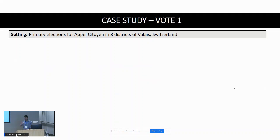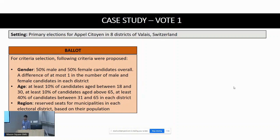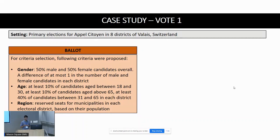To summarize the setting: the Representation Pact was used for primary elections for Appel Citoyen in eight districts. Phase one decided the criteria. After internal consultation among the board members, they put three criteria to vote. The first was gender: 50 percent male and 50 percent female candidates overall, with a difference of at most one if the number of seats is odd. The second was age: at least 10 percent aged 18–30, at least 10 percent aged above 65, and at least 40 percent aged between 31 and 65.